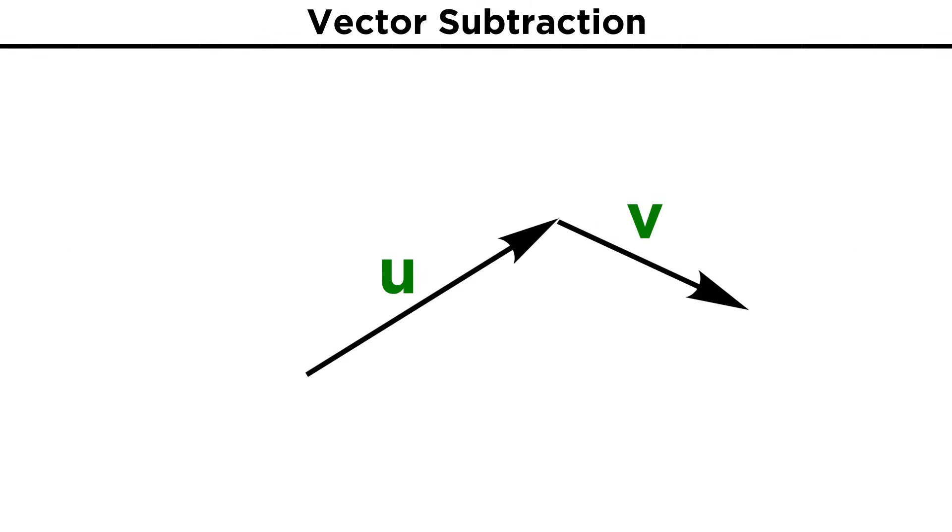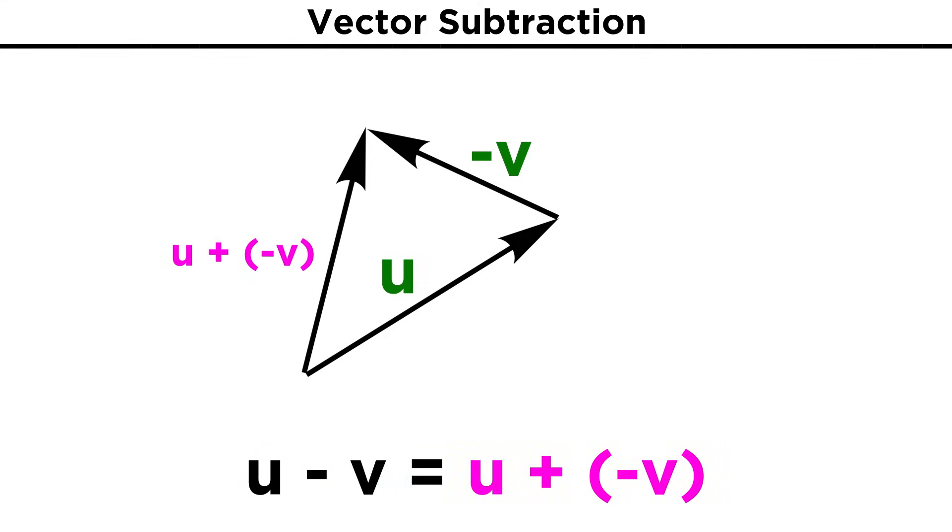This understanding will allow us to now perform vector subtraction. If we have two vectors, U and V, aligned as we did previously, how can we get U minus V? Well, U minus V is the same thing as U plus negative V, so if we take V and flip the direction, it is now negative V, and we can just do vector addition like we already learned. Completing the triangle with U and negative V will give us U plus negative V, or U minus V, and we have just performed vector subtraction.